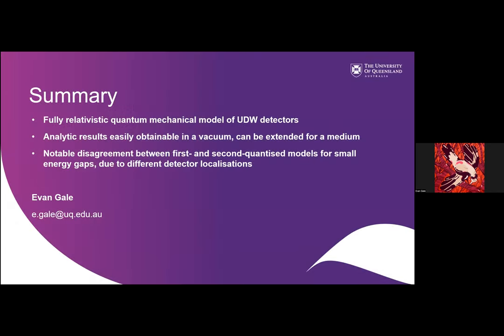So in summary, we have a fully-relativistic quantum mechanical model of Unruh-DeWitt detectors. We've obtained some analytical results in the vacuum, and these results can be extended for a medium. You will have to look at that numerically, since things are a bit more complicated there. And what's interesting is that we do have this disagreement between the first and second quantized models due to the different localizations of the detectors. Thank you.